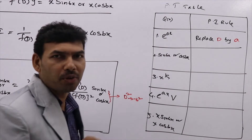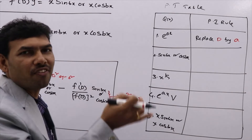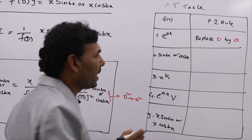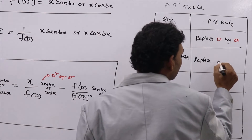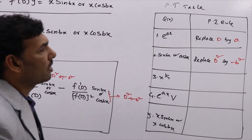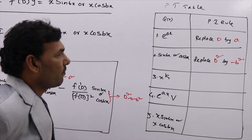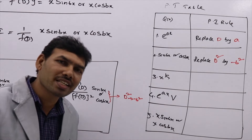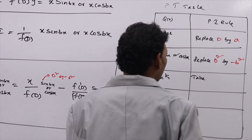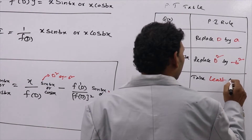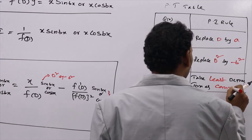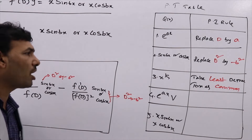Similarly, for sin(bx) and cos(bx), replace D² by minus b². Write minus b² in the place of D². When you have sin(2x), sin(3x), cos(x), cos(2x), or cos(3x), apply this rule. For x^k, take the least-degree term as common — take the least-degree term as common if you have x, x², or x³.